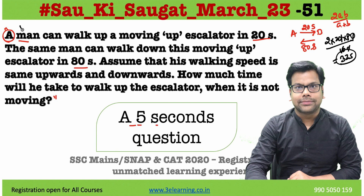Whenever you have a single man traveling up or down, with the steps or time given, without the escalator or any other support, the total time or total steps are nothing but 2AB upon A plus B. So 2 into 20 into 80 divided by 20 plus 80 gives 32 seconds — the answer, solved in less than 5 seconds after reading and understanding the question.